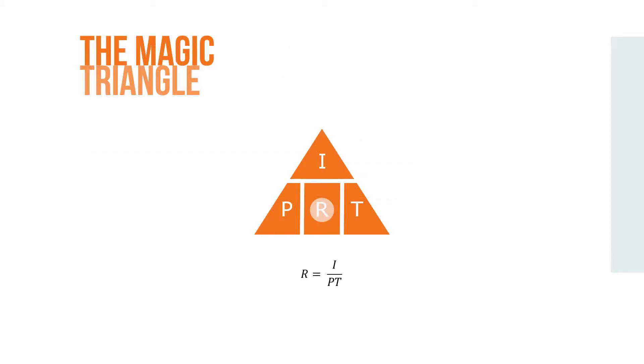We can also find the formula in the magic triangle by covering the unknown variable r as follows: r equals i over pt.